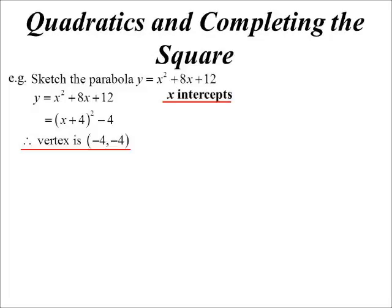If I wanted to find the x-intercepts, well, again, if it's in the completing the square form, I can now say that has to equal 0. So x plus 4 squared is 4, which means x plus 4 is plus or minus 2.